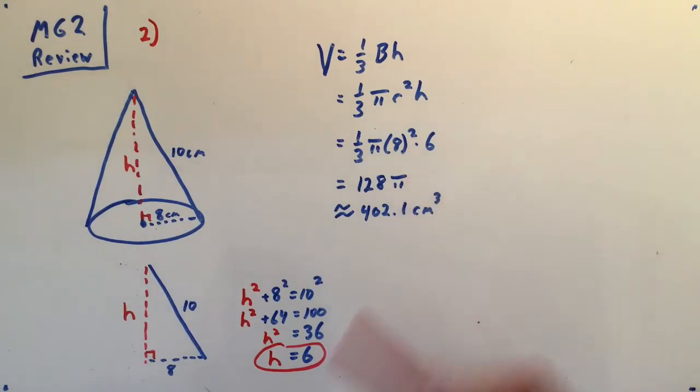Once I get h equals 6, I can plug it back in for height and I get an exact value of 128π cubic centimeters, which is approximately 402.1 cubic centimeters.